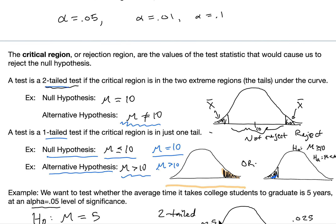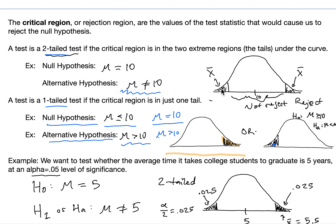The critical region or rejection region are the values of the test statistic that would cause us to reject the null hypothesis — extreme values that would lead to rejection. A test is a two-tailed test if the critical region is in the two extreme regions, the tails under the curve. So if an extreme value on either side would cause us to reject the null hypothesis, this is called a two-tailed test. For example, we could have a null hypothesis that the mean is equal to 10. In that case, the alternative hypothesis for this two-tailed test would be that the mean is not equal to 10 — it could be different from 10 in either direction.